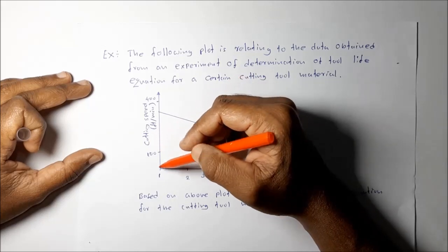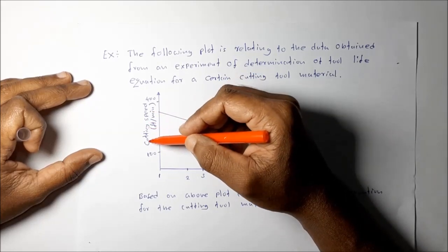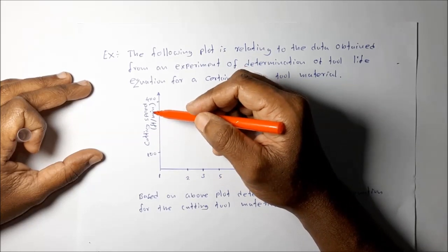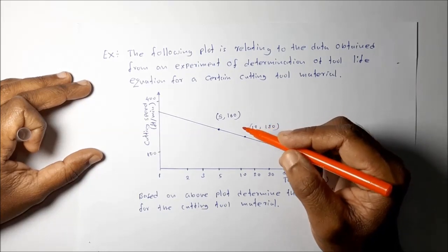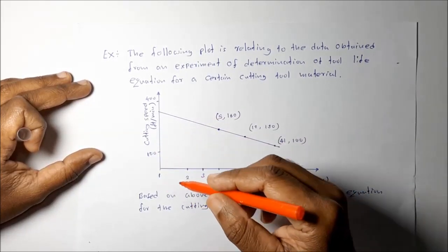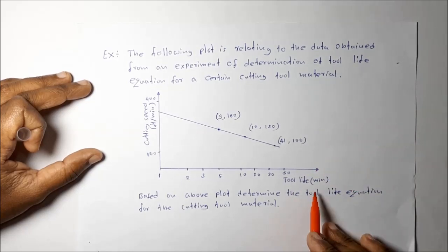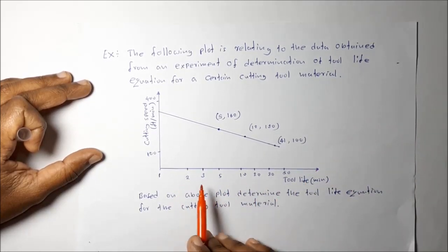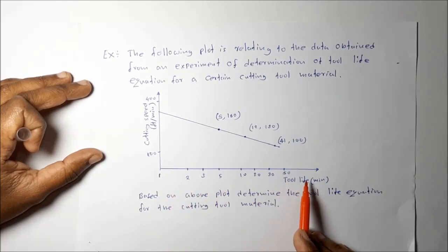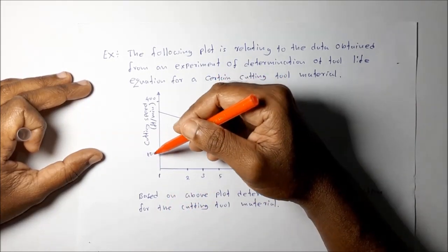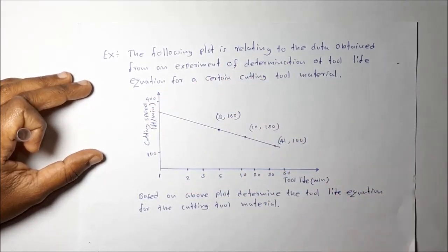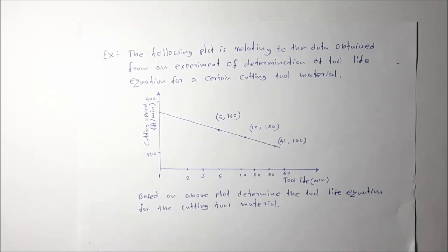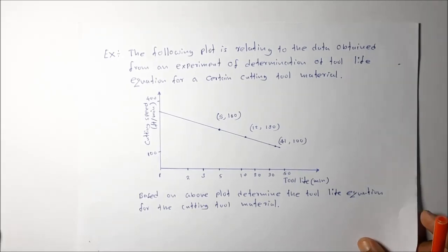This is the plot given: on this axis is cutting speed, and the graph is given in natural logarithmic values on a natural logarithmic scale. The tool life is on this axis in natural logarithmic values, and the cutting speed is on this axis in natural logarithmic values. Let me explain the theory behind this plot and Taylor's tool life equation.